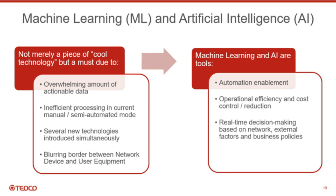It's important to understand that ML and AI are not merely cool technology to play with — they're going to be an integral part of future network operations for several reasons. With the evolution of 5G deployment, the amount of actionable data generated by the network will simply become overwhelming. The traditional telecom approach of putting more people and introducing simplistic automation to process and act upon more data is simply no longer scalable. Also, 5G is introducing several new technologies and architectural innovations in parallel: NFV, SDN, edge computing, seamless handover between various radio access technologies — all of that is happening together.